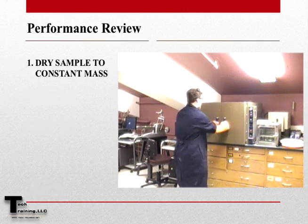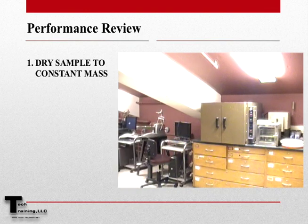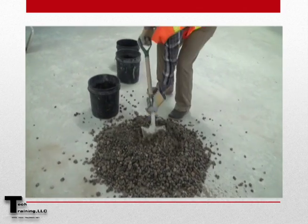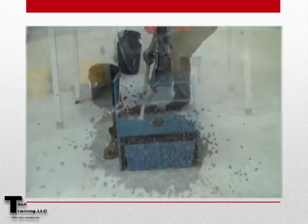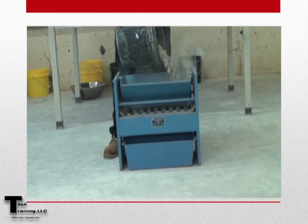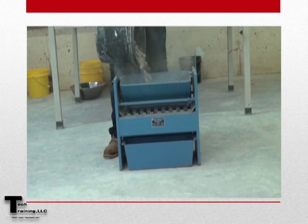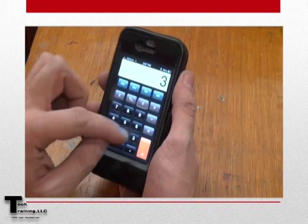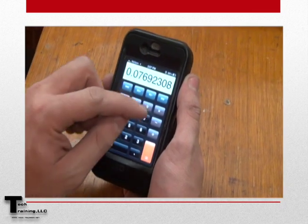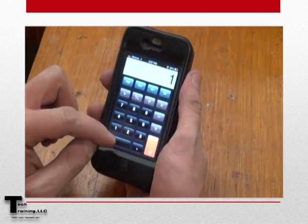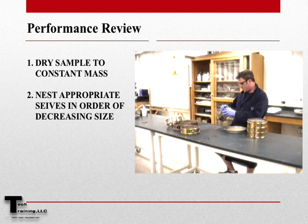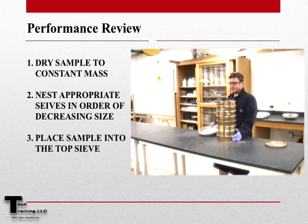As our first step, we dry the sample to a constant mass. It's worth noting that for control purposes, particularly when rapid results are desired, it is generally not necessary to dry coarse aggregate for the sieve analysis test. The results are little affected by the moisture content, unless the nominal maximum size is smaller than 12.5 millimeters. We can now nest the appropriate sieves in order of decreasing size and pour our sample into the top sieve.